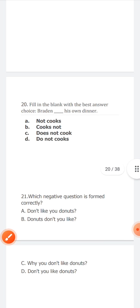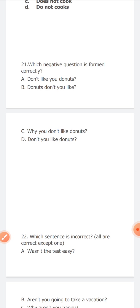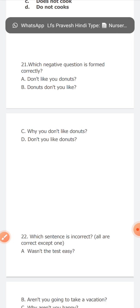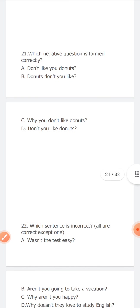Barton does his own dinner. Barton does not cook, not cooks not, does not cook, or do not cooks—does not cook. Now which negative question is formed correctly? Don't you like donuts? Donuts don't like you. Why don't you like donuts or don't you like donuts? So which negative question is formed correctly? It's don't you like donuts.